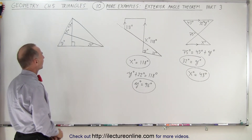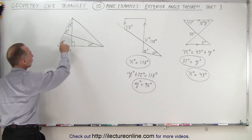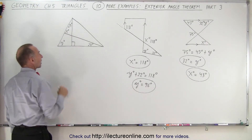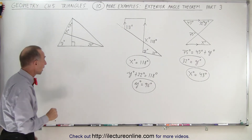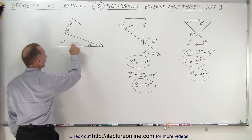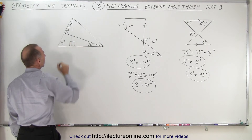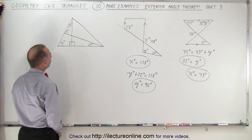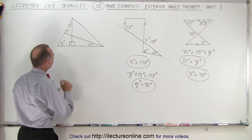What about this third one? We have to be careful here because it almost looks like x degrees is a right angle, but it's not indicated as a right angle. The only right angle indicated is this one, which means the other side of that line must also form a right angle right there. So what about x degrees — how do we handle that?